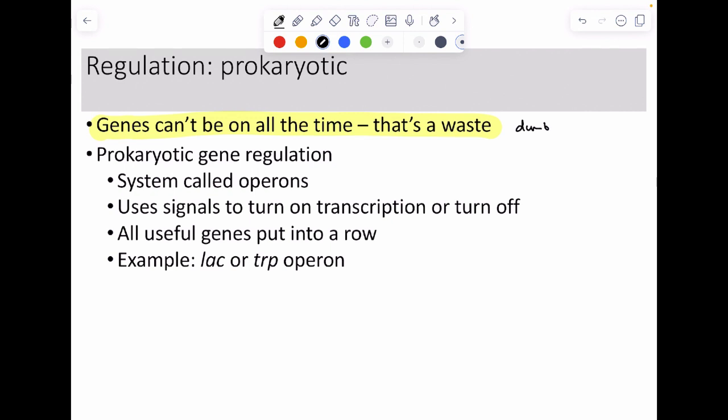If we look at prokaryotes, they quite simply need to turn genes on when they need them and turn them off when they don't. They're going to utilize a system called operons. This is not for all genes. The reason why is operons are going to use signals that turn transcription on or off.